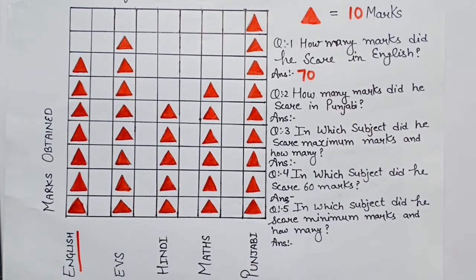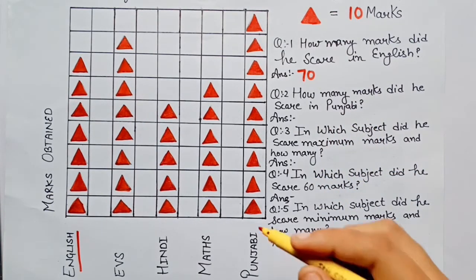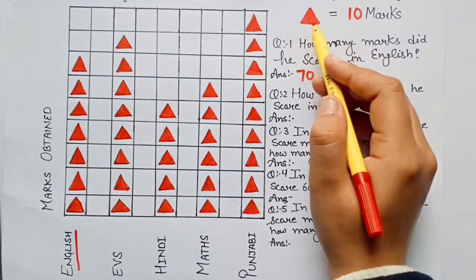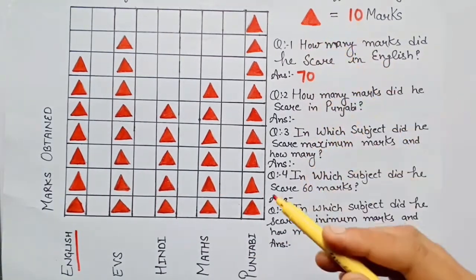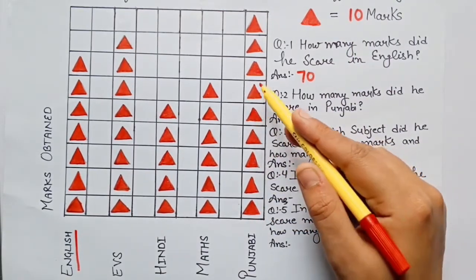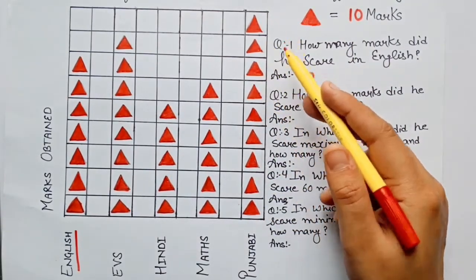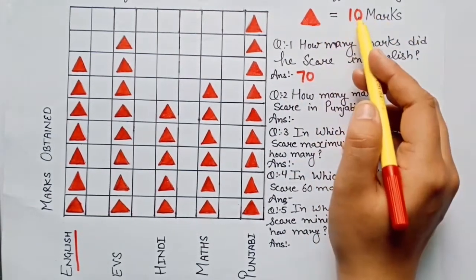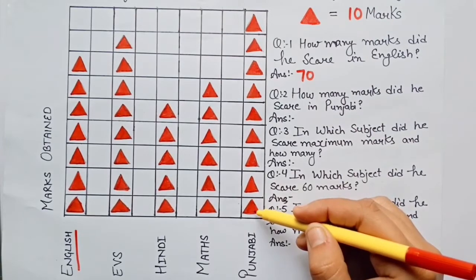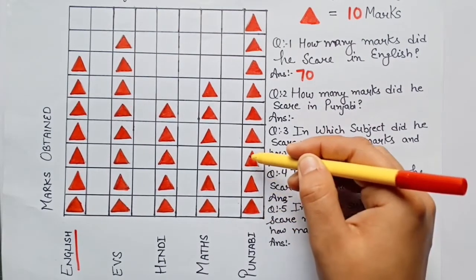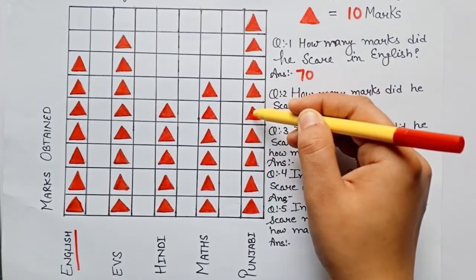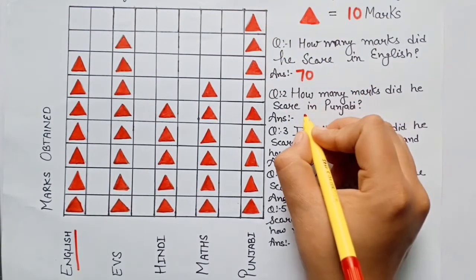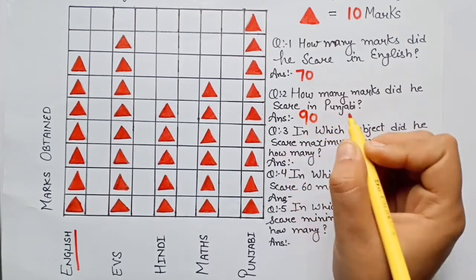The next question is: how many marks did he score in Punjabi? Usne Punjabi mein kitne marks score kiye hain? In Punjabi there are 9 triangles. Each triangle equals to 10 marks, so that is 10, 20, 30, 40, 50, 60, 70, 80, 90. He scored 90 marks in Punjabi.